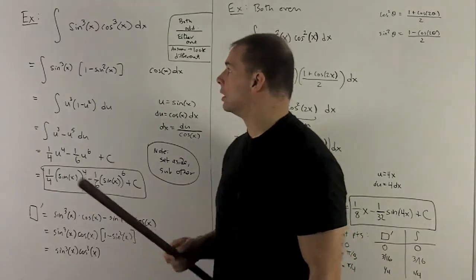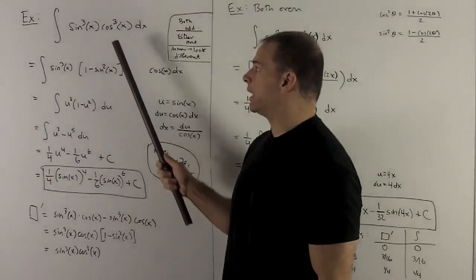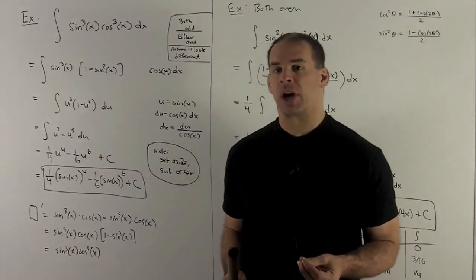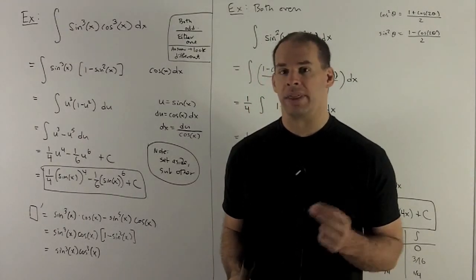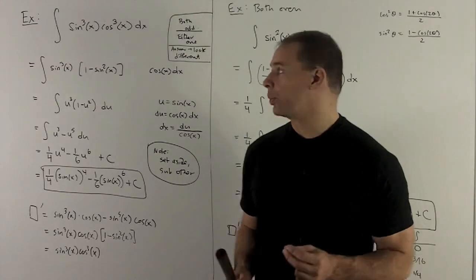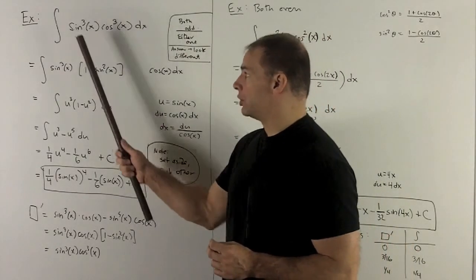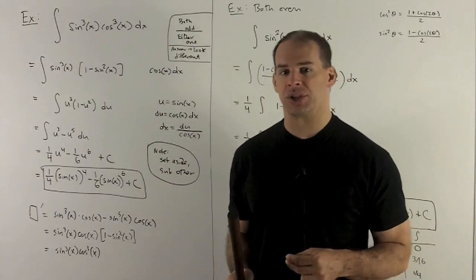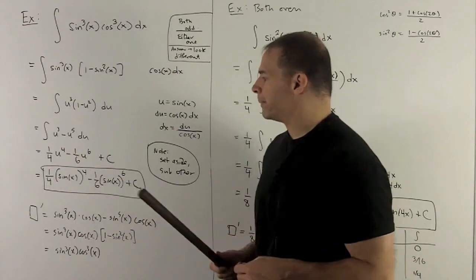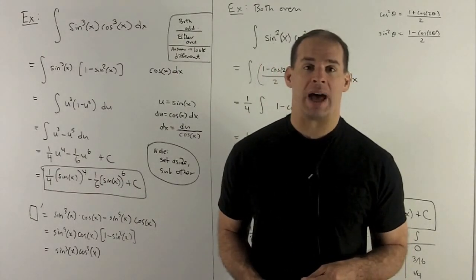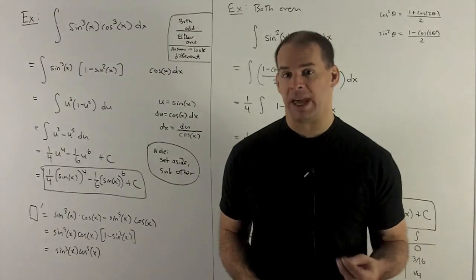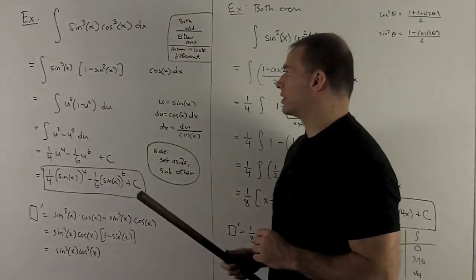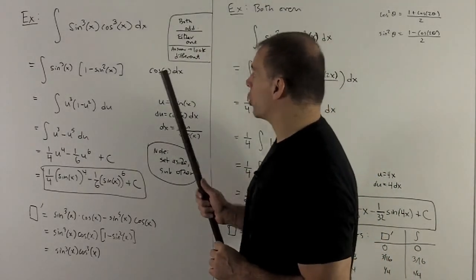For my next example, let's consider sine cubed x, cosine cubed x. So in this case, you note both exponents are odd. So that means I could set aside either one that I like. So it's just a matter of choice. So just note, though, if you try it by setting aside each one and compare your answers at the end, they're going to look completely different. The only difference is they may differ by a constant. And you may need to do some gymnastics with trigonometry to make them look like each other.